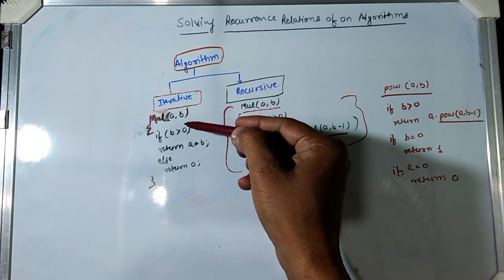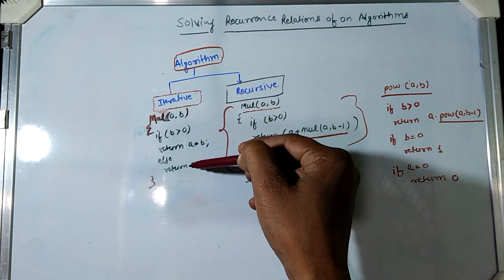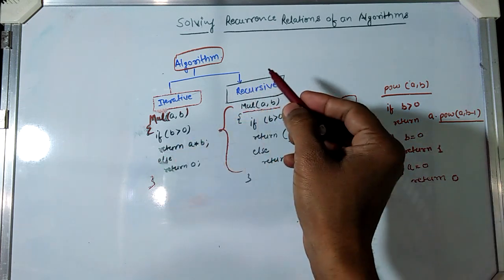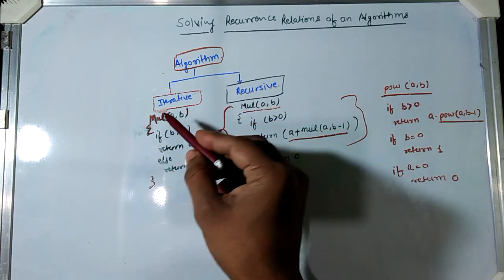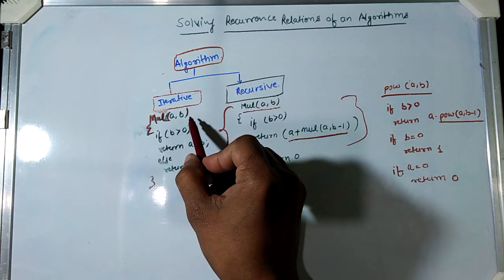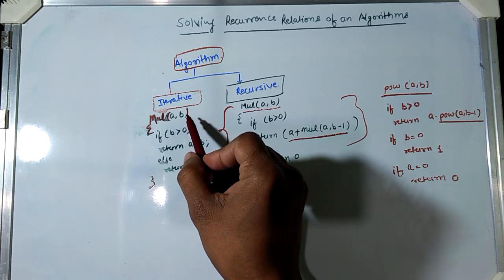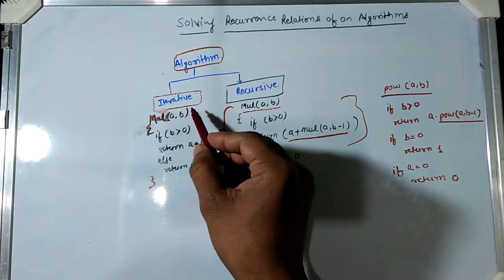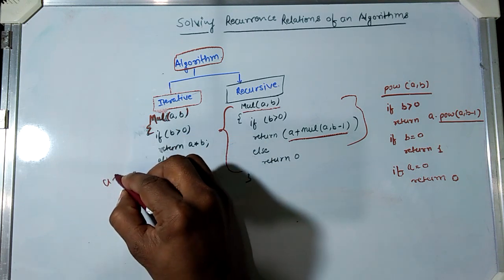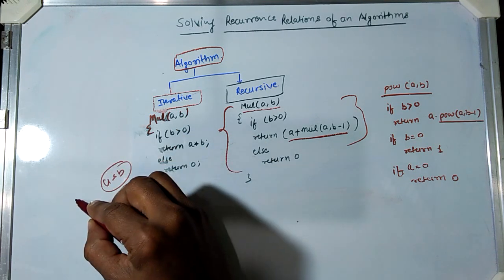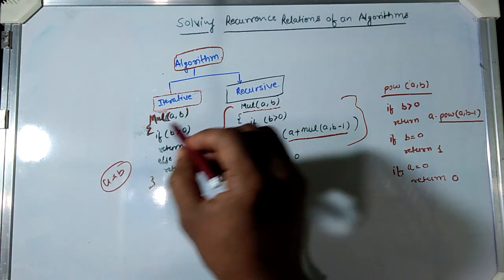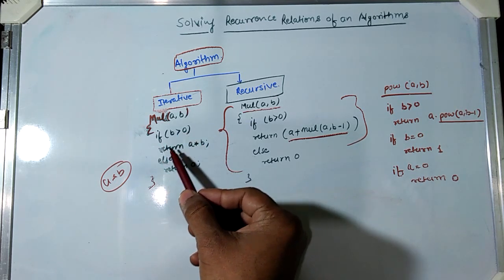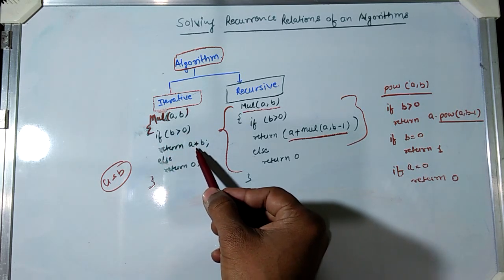In an iterative algorithm, the problem can be solved by a different number of steps. For example, in this multiplicative function we have two arguments a and b, which should return a into b, meaning multiplication of two numbers. The pseudo code says: if b is greater than zero then return a into b.